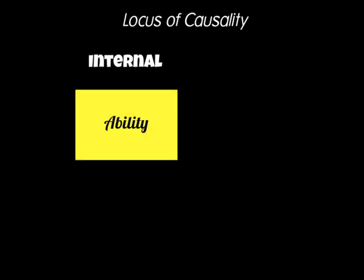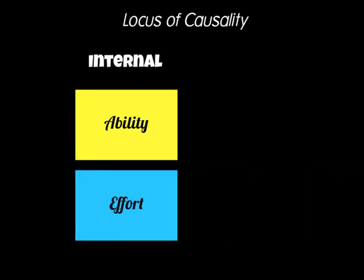So let's say again, if you played on a Sunday and you lost — what is the reason you gave for that? That's the locus of causality. These reasons can be internal, meaning they come from within you. For example, ability is an internal factor, and effort is also an internal factor. If you failed on a Sunday, you could blame your own ability — 'I wasn't quite good enough' — or you could blame effort: 'I didn't put in enough effort on Sunday, that's why we lost.'